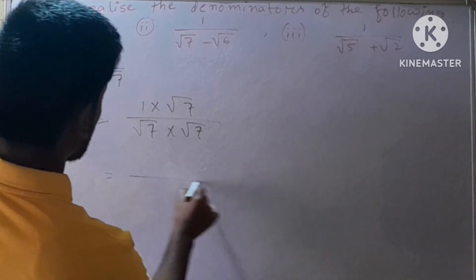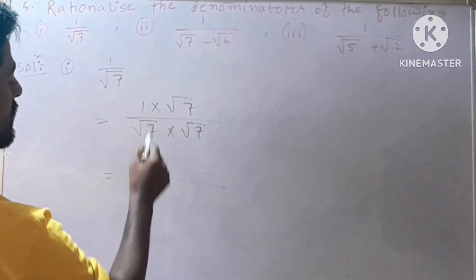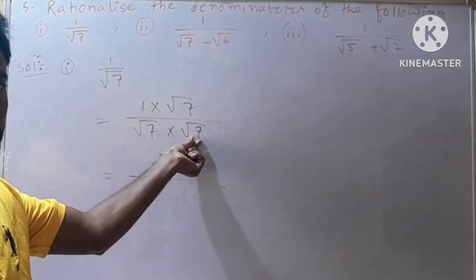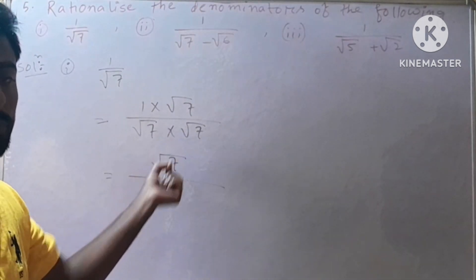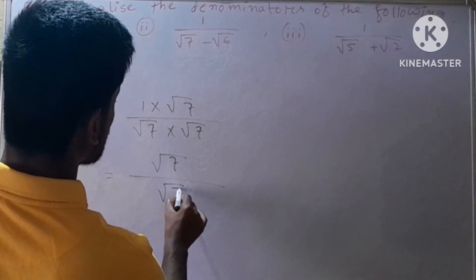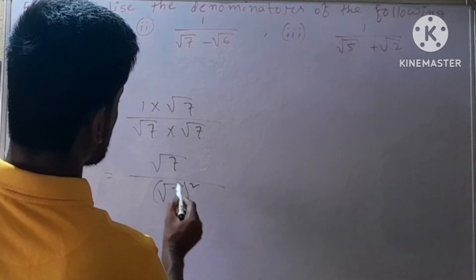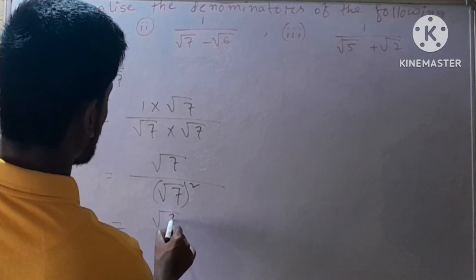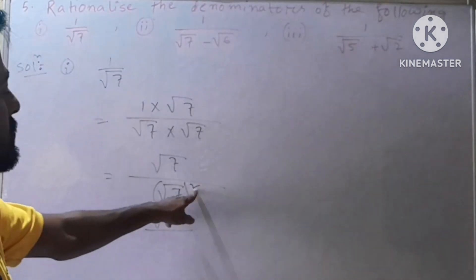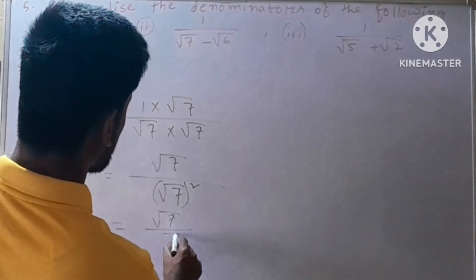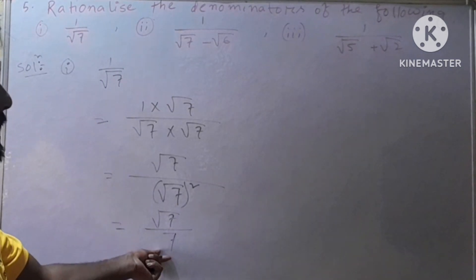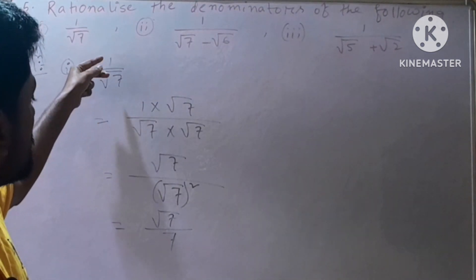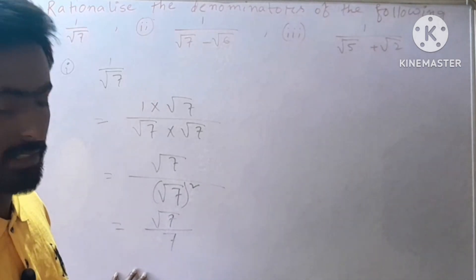Then we get: in the numerator, 1 into root over 7 gives root over 7. In the denominator, root over 7 into root over 7 — that means root over 7 multiplied two times — so we can write root over 7 squared. This implies the numerator is root over 7, and in the denominator, the square and root cancel, leaving 7. Since 7 is rational, the denominator is rationalized.